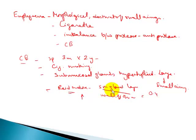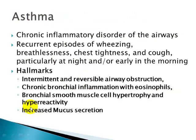Today's topic is asthma. Asthma is similar to chronic bronchitis in that it involves the larger airways and is also a chronic inflammatory disorder. However, certain hallmarks are present in asthma but absent in chronic bronchitis: recurrent episodes of wheezing, breathlessness, chest tightness, and cough which is worse at night or early in the morning.